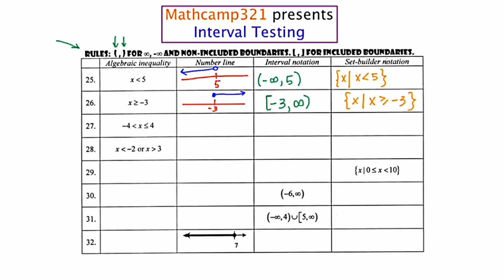Moving on to number 27, we have a compound inequality: x is between negative 4 and 4, and it's inclusive with the positive 4. Here's my number line — I'm going to put those two important points on it: negative 4 and 4. It's going to be an open circle for negative 4 and a closed circle for positive 4. And I'm supposed to shade everything in between — all those x values between those two values.